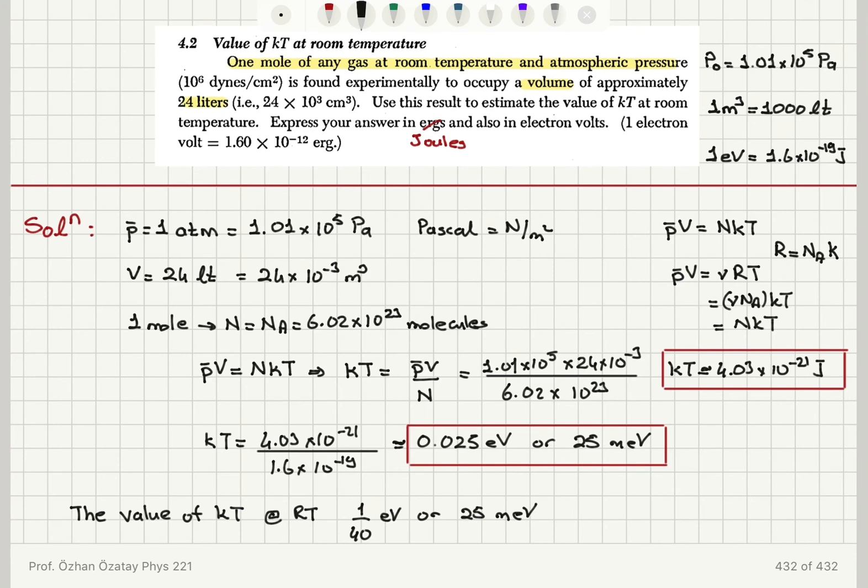Now, we know that at one atmospheric pressure and room temperature, one mole of any gas occupies 24 liters. So using this information, we have found that the KT value is 4.03 times 10 to minus 21 joules because it's P bar V over capital N number of molecules. And in electron volts, we have to divide it by the electron charge, 1.6 times 10 to minus 19 coulombs. So if we divide this, joules divided by electron charge, we obtain 0.025 electron volts or 25 milli electron volts, which is actually 1 over 40 electron volts.